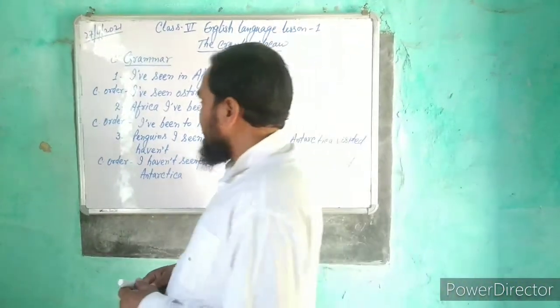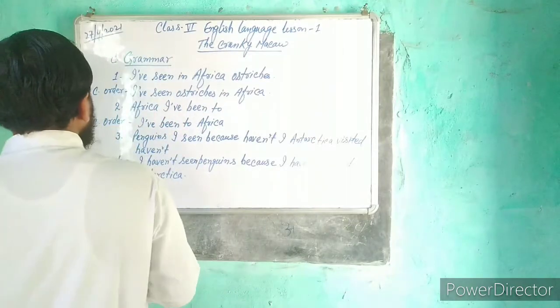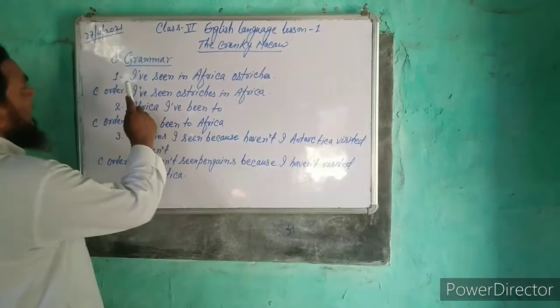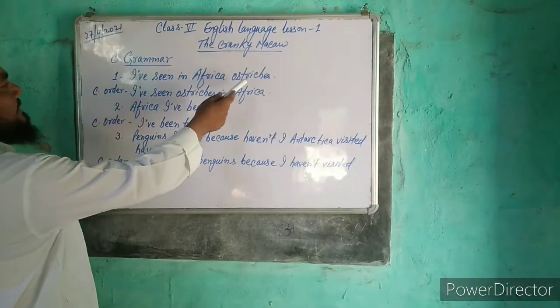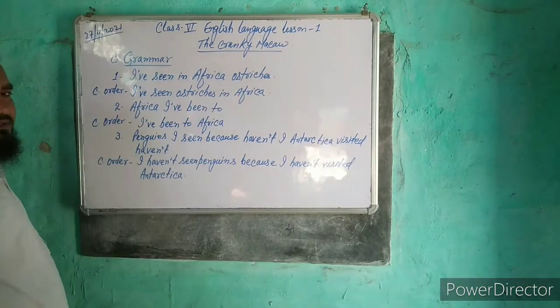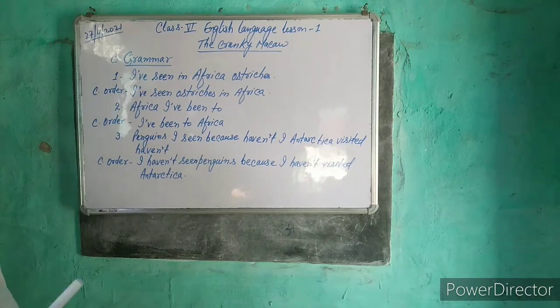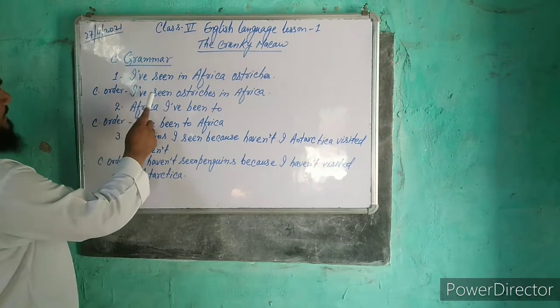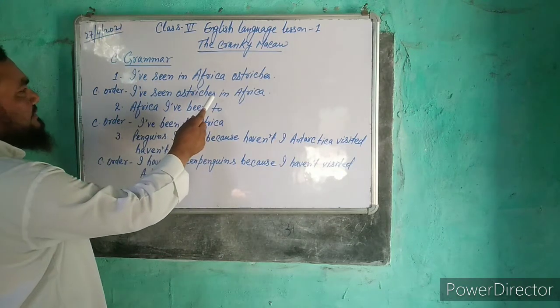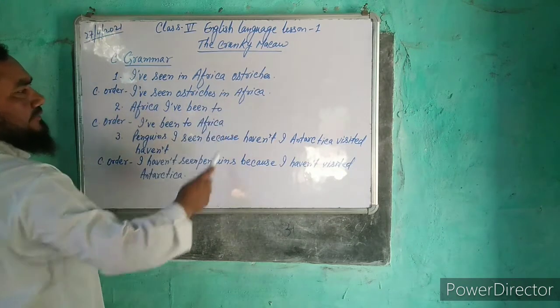So let us start. The first sentence is: I have seen in Africa ostriches. It is not in correct order. The correct order is: I have seen ostriches in Africa.